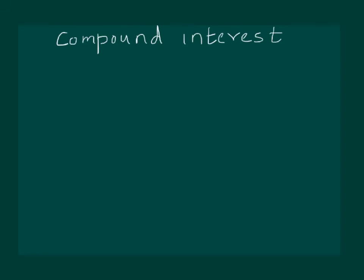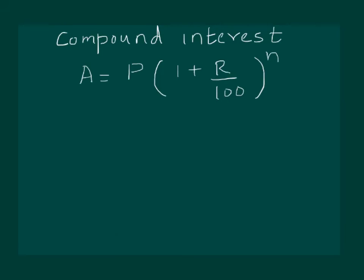For compound interest, using the same notations, the amount formula is: A = P × (1 + r/100)^n, where r is the rate of interest and n is the number of years. This gives the amount when the principal is compounded annually at rate r percent. Compound interest is then calculated as CI = A − P, subtracting the original principal from the computed amount.